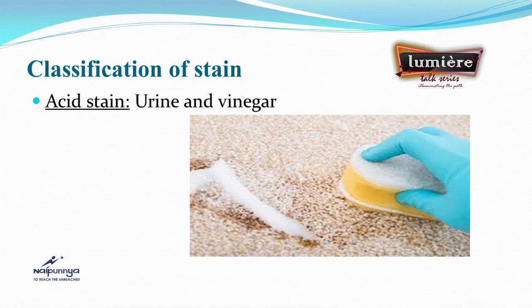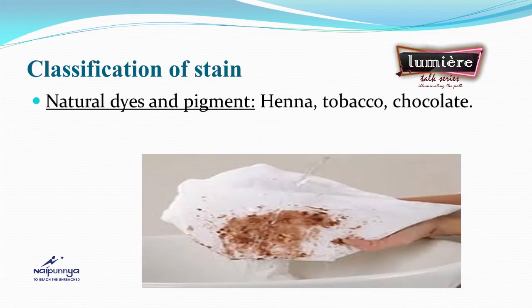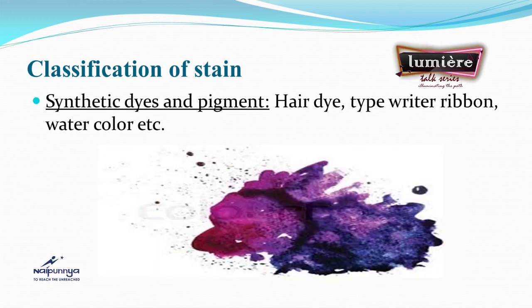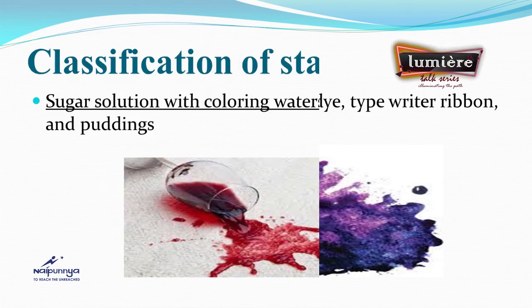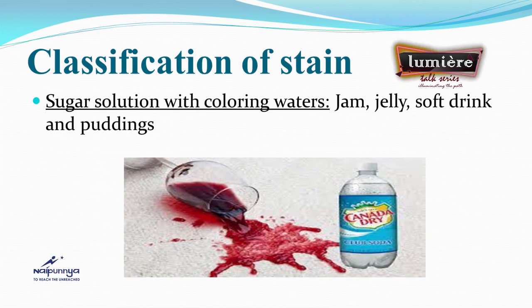There is also the category of alkaline stain — old urine also comes under this category. Natural dyes and pigments include stains caused by henna, betel leaf, tobacco, chocolate, coffee, tea, and so on. Synthetic dyes and pigments include stains from hair dyes, markers, board markers, typewriter ribbons, watercolour, and so on.